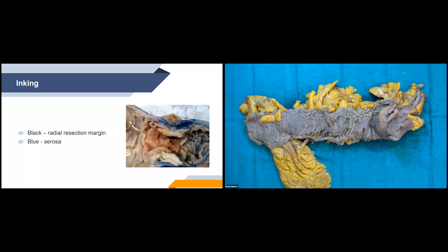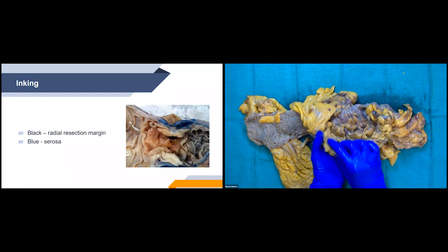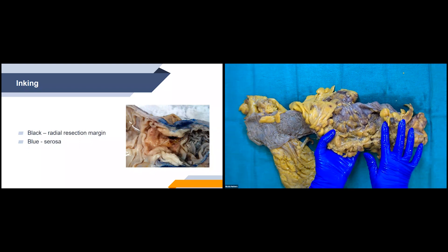Next steps include making sure to comment on how we ink the specimen. We do black for the radial margin and blue for the serosa — that's just at our institution; it could be different elsewhere. You can see in the picture that the blue is overlying the mass — that's the blue ink we put on before we cut through the specimen. This mass is a circumferential mass, so we wanted to ink it before we cut through to open it. For my radial margin, I would ink this whole area here.